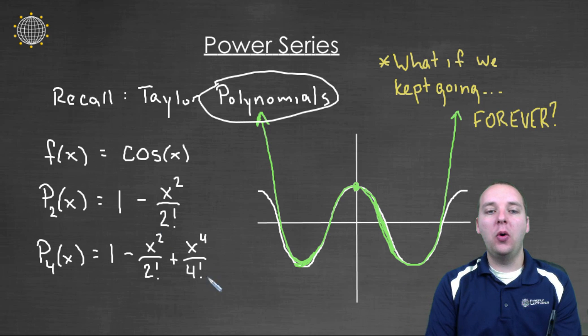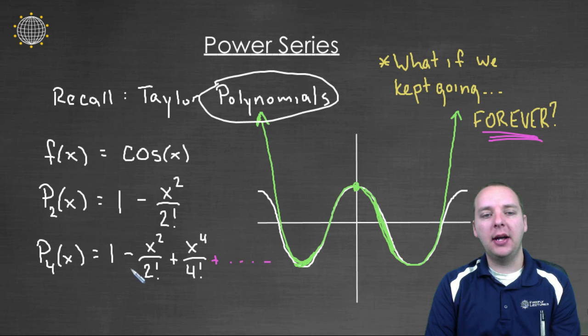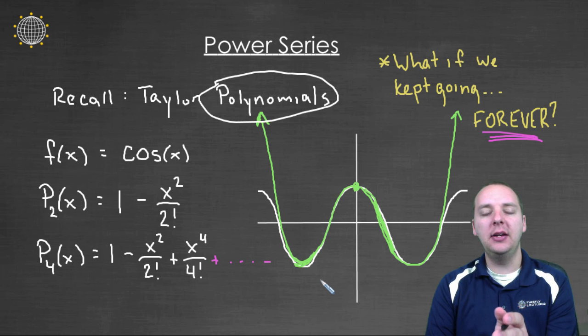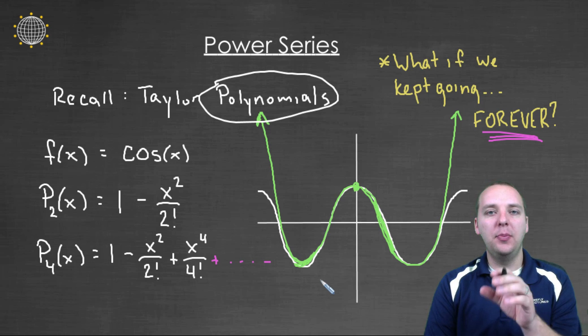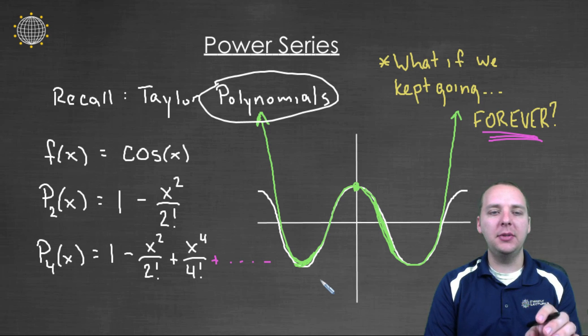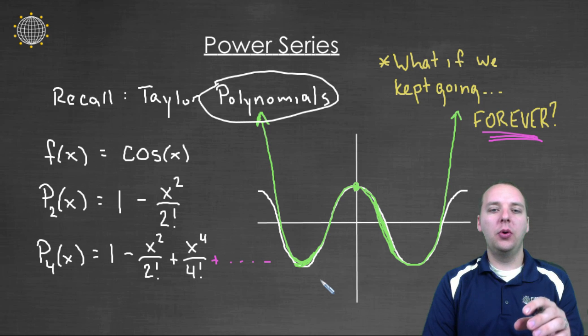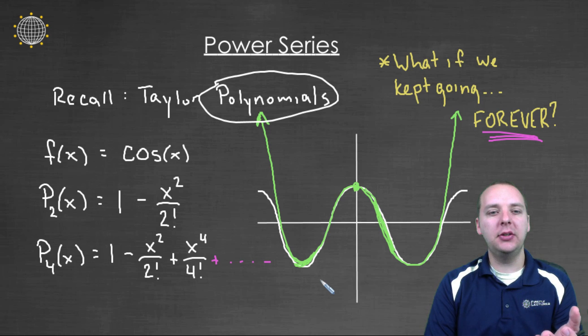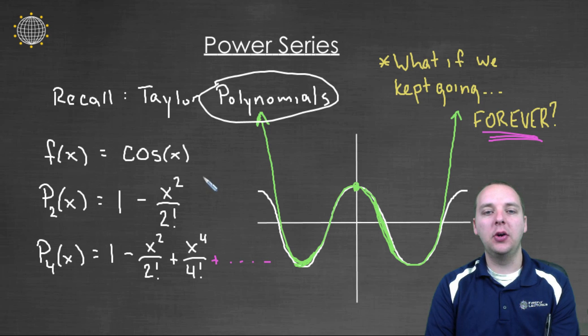So this just opens up a whole world of questions. For example, if we go on forever, does the increase in amount of terms here, as we increase these towards infinity, does it wind up being exactly the same as the cosine function? Or is it still an approximation? Or can we even do that? It's just this whole world of questions that open up if you continue to add on term after term after term. That's the idea of a power series.